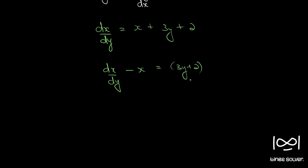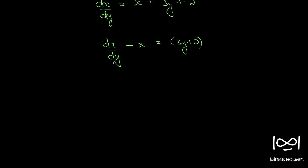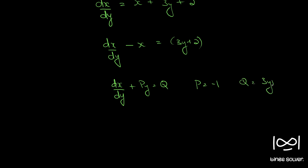So now this is in the standard form of a linear differential equation. The standard form is dx by dy plus p times x equals q, where p and q should be either constants or functions of y alone. Here p is minus 1 and q is 3y plus 2.